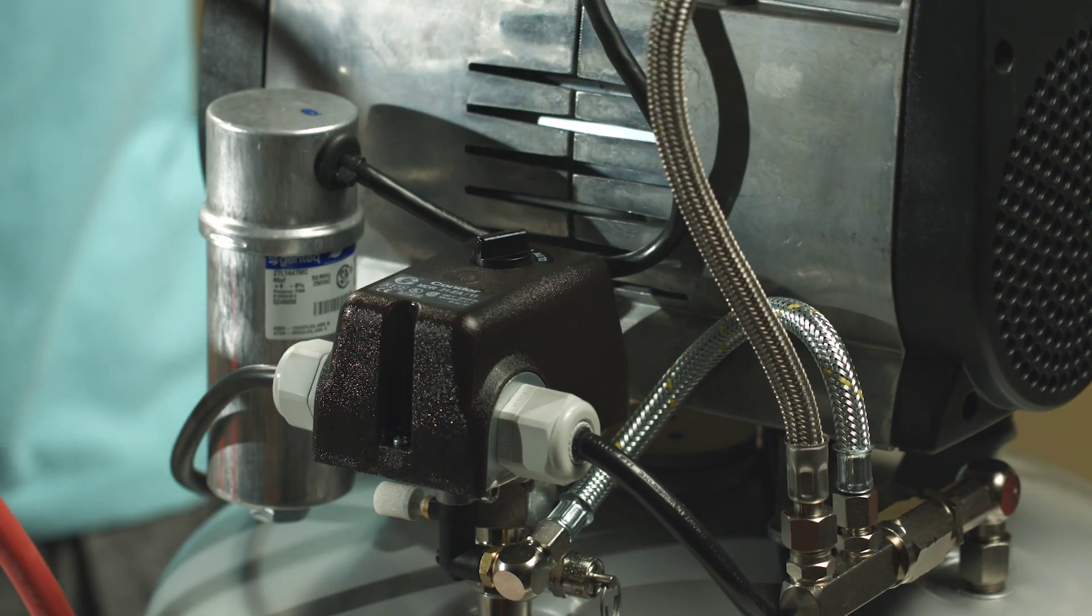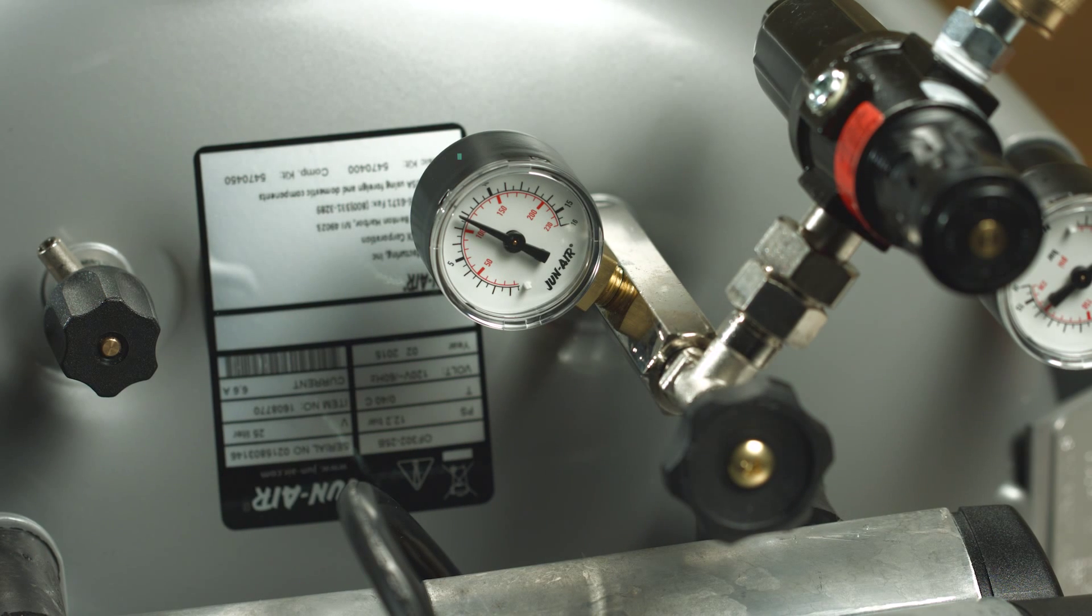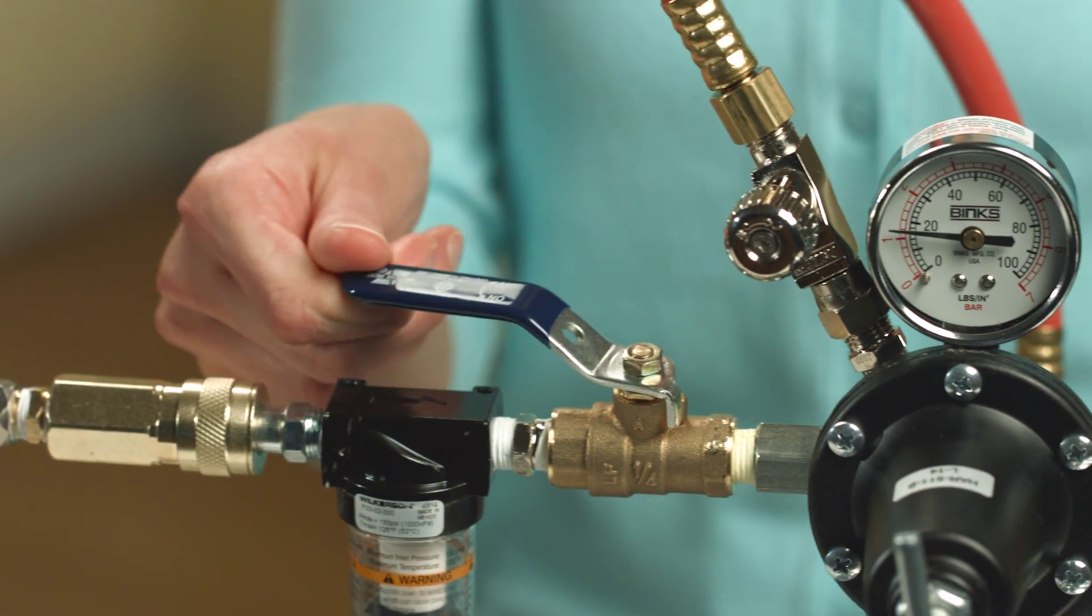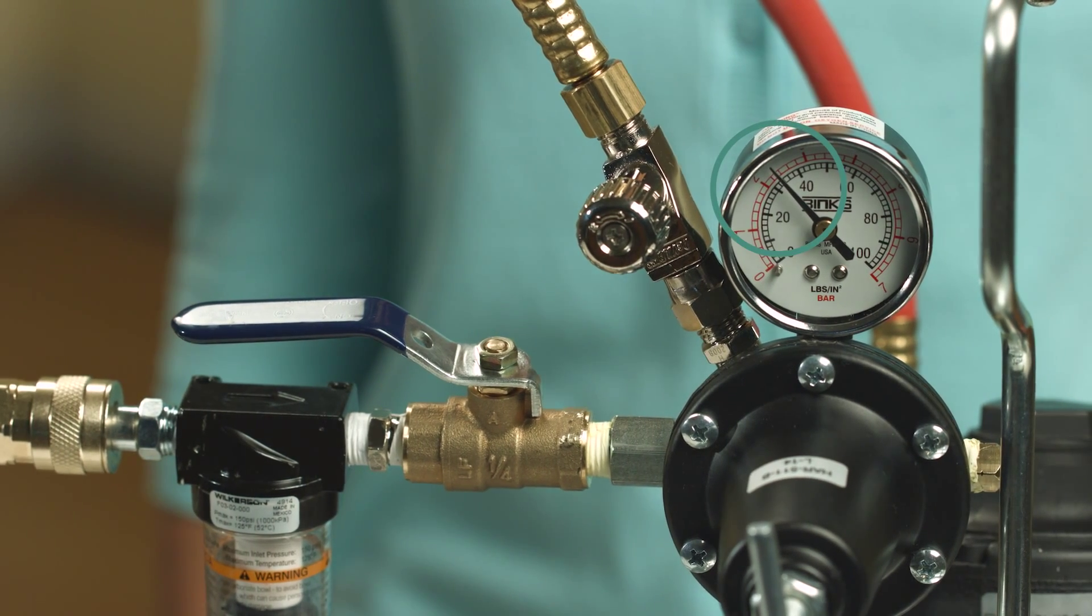Start the air compressor and wait until it shuts off automatically. The air compressor shuts off automatically when the internal pressure reaches around 120 psi. Open the main valve slowly. The gauge on the spray tank will read 30 to 35 psi.